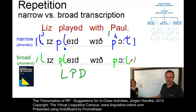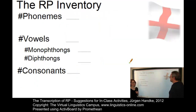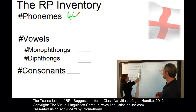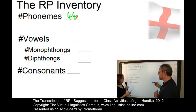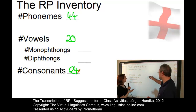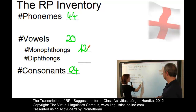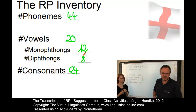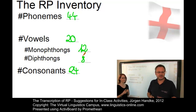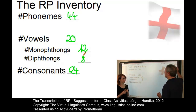Let us now turn our attention to the sound system of received pronunciation. Let's first list the inventory itself. How many phonemes does RP have? RP has 44 phonemes, subdivided into vowels and consonants — 20 vowels and 24 consonants. And we have 12 monophthongs and 8 diphthongs. Since the next unit will be about American English and the consonants of both varieties are very similar, let us concentrate on the vowels of RP first.